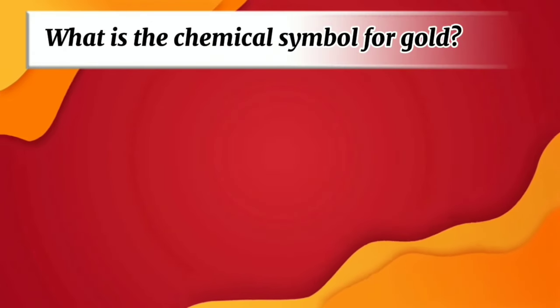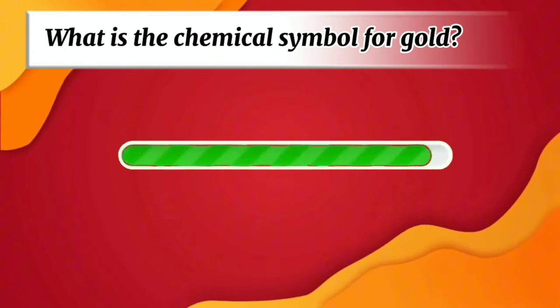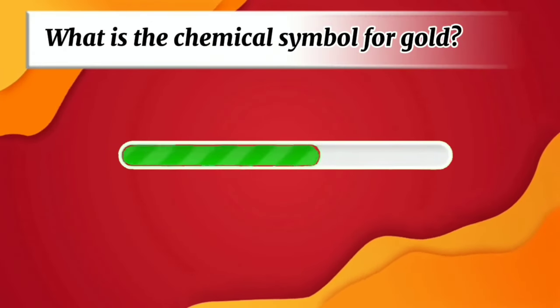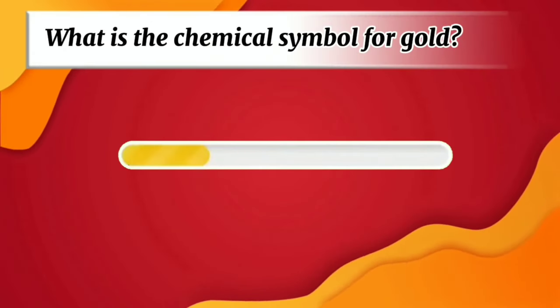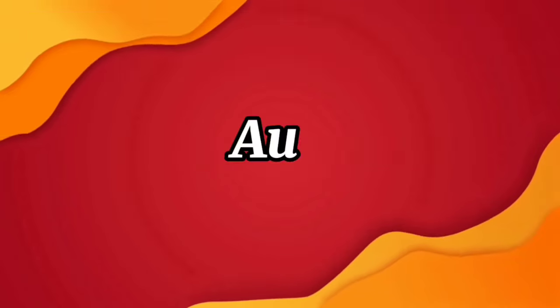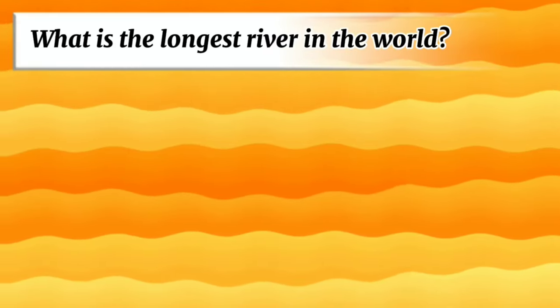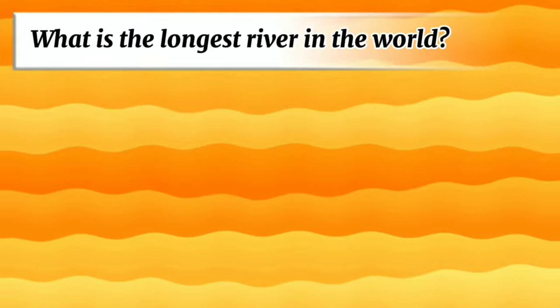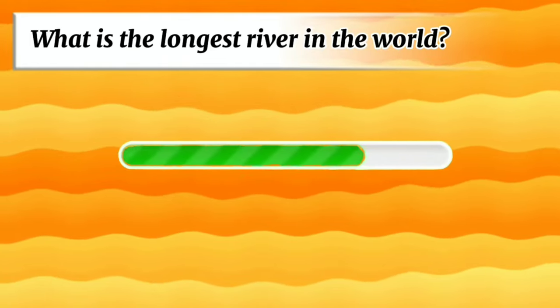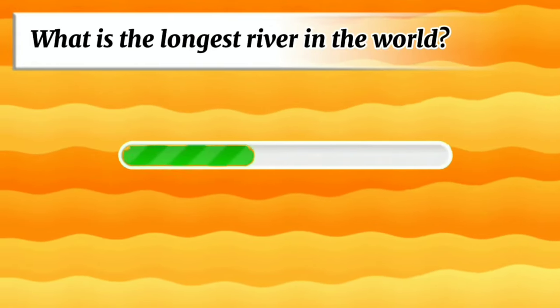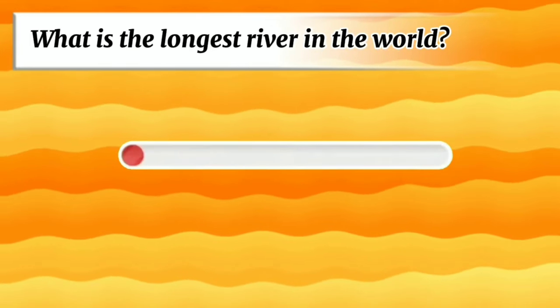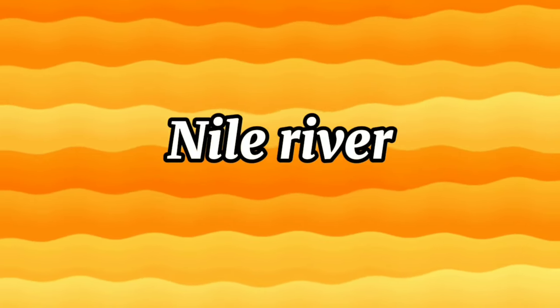What is the chemical symbol for gold? Au. What is the longest river in the world? Nile River.